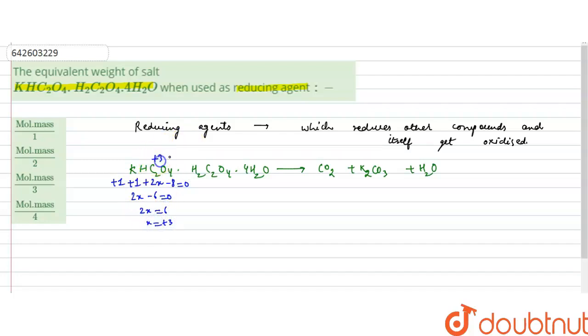Similarly, we will find the oxidation state of carbon in H₂C₂O₄. For two hydrogen it will be +2, for two carbon it is 2x, and for four oxygen it is -8. So it will be 2x - 6 = 0. So this gives x = 3. Here also the oxidation state of carbon is +3.